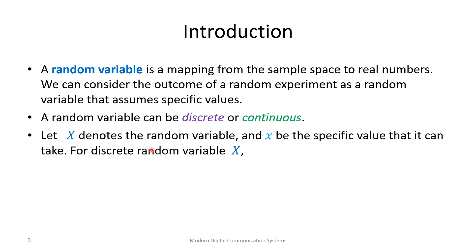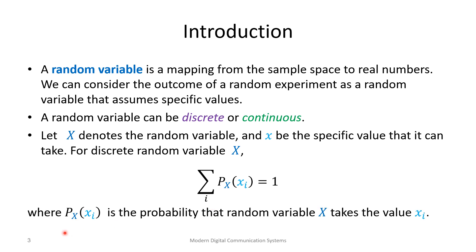Usually the random variable is referred to with a capital letter. Let X denote the random variable — capital X — then small x will represent the specific value or outcome. So capital X for the random variable and small x for the outcome. If we are dealing with a discrete random variable, then the probability for a specific value of x, if we sum all possible values of x, the answer should be one.